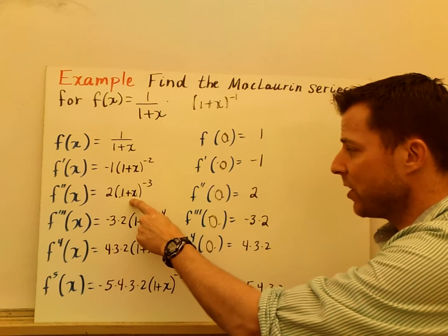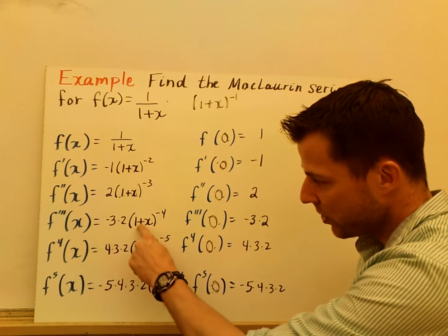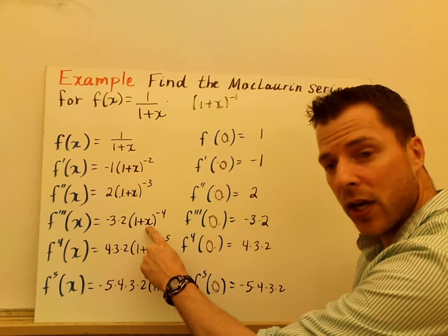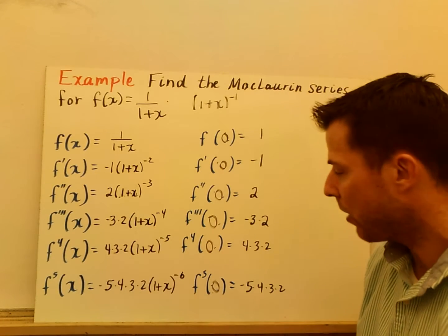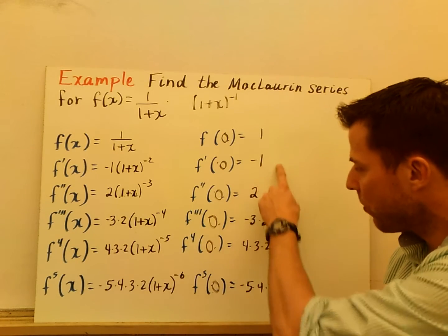0 in for x here, that's still 1, so notice we're getting these coefficients, because this term here, when you plug 0 in, is always going to be 1. 1 to any power is 1, doesn't matter if the exponent's positive or negative. So look what we're getting here.